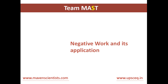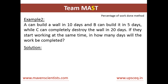Now we will see negative work and its application. For example, let's say person A and person B are trying to build a wall, and person C is trying to destroy the wall. We have to find out how many days the work will take to be completed. In order to do that, we will consider the work of C as negative. Here, A can build a wall in 10 days and B can build it in 5 days, while C can completely destroy the wall in 20 days. If they start working at the same time, in how many days will the work be completed?